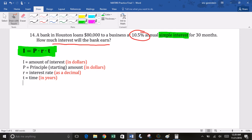You know, for example, if we plugged in 30 into the formula, well, that would be interpreted as 30 years. We want 30 months.